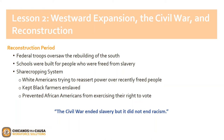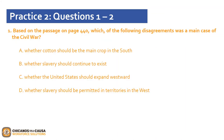Now that we had an overview of Westward Expansion, the Civil War, and the Reconstruction period, let's take a look at Practice 2. Question 1 asks: based on the passage on page 440, which of the following disagreements was the main cause of the Civil War? A. Whether cotton should be the main crop in the South. B. Whether slavery should continue to exist. C. Whether the United States should expand westward. D. Whether slavery should be permitted in territories in the West.